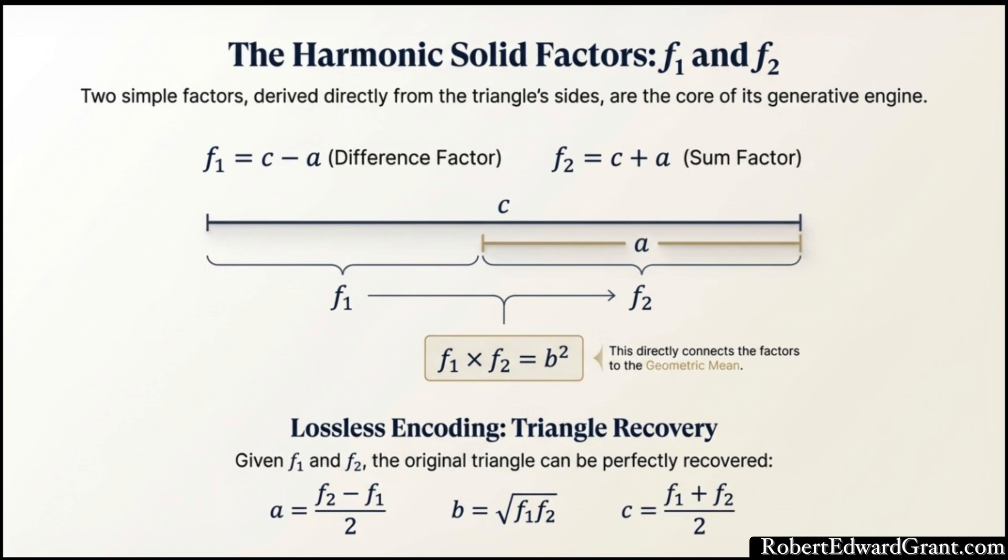What's really fascinating is the connection between these two. Algebraically, if you multiply them, the difference factor times the sum factor, you always get the square of the middle leg B. So F1 times F2 equals B squared, always. The difference and the sum of the outer two sides perfectly define the middle one. The whole triangle is perfectly encoded in just those two factors. It's a completely lossless key.